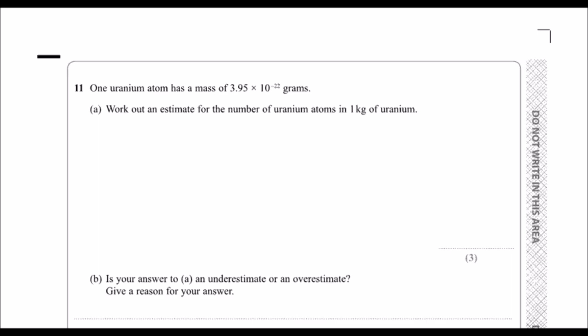Okay, one uranium atom has a mass of 3.95 times 10 to the minus 22 grams, so a tiny, tiny mass. Work out an estimate of the number of atoms of uranium in one kilogram of uranium.